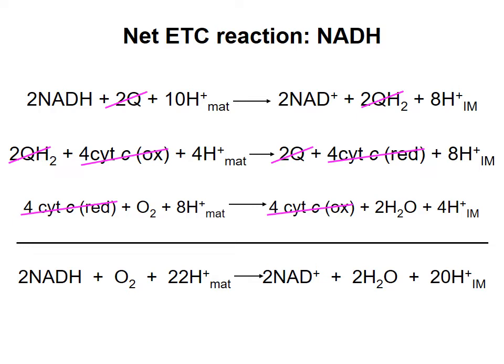For example, the QH2 that's produced by complex 1 is consumed in the reaction of complex 3, so we can eliminate these from the net equation. What we're left with is the equation at the bottom.